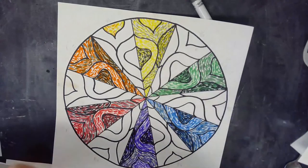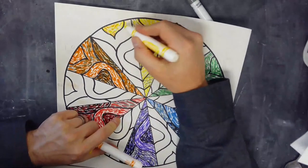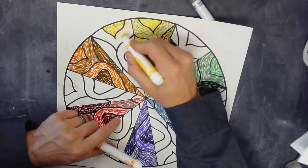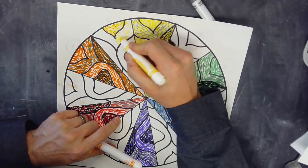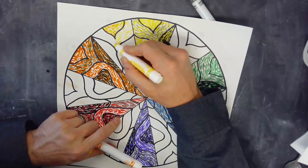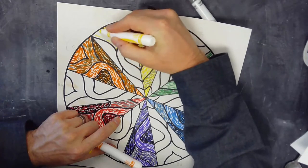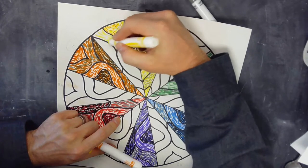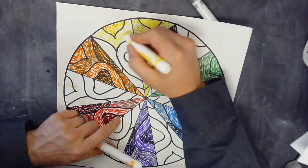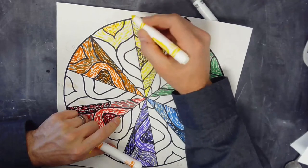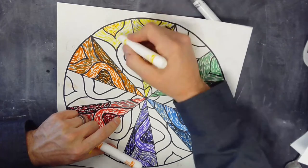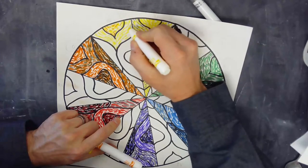Right in here I'm going to do the same thing. Again I am following the contours of this shape. And try not to do it too systematically where you're like going down rows, but just try and make it flow a little bit more naturally.